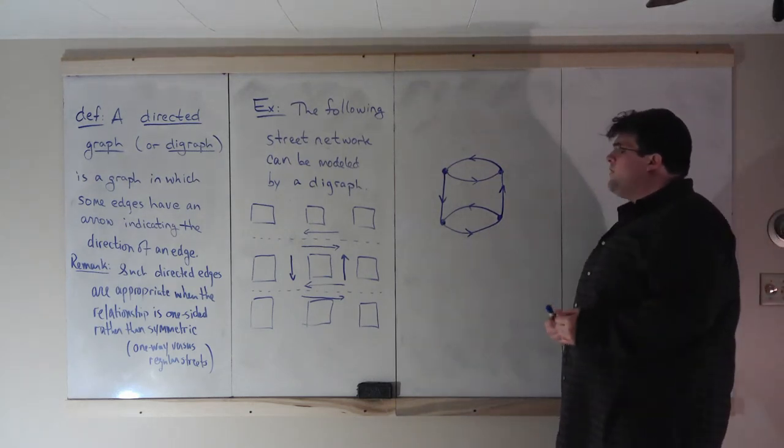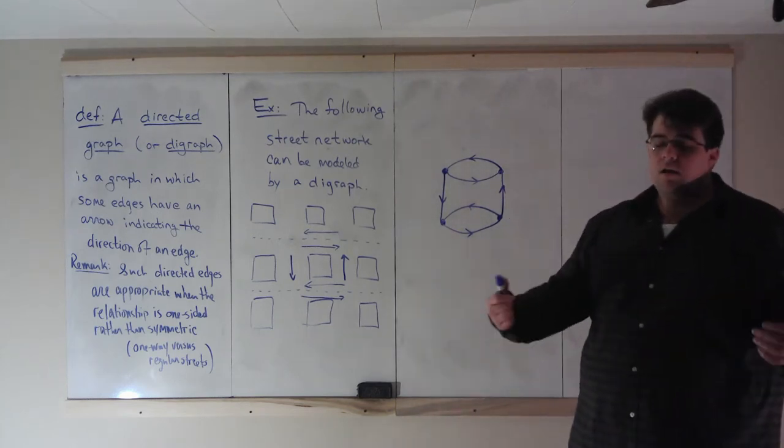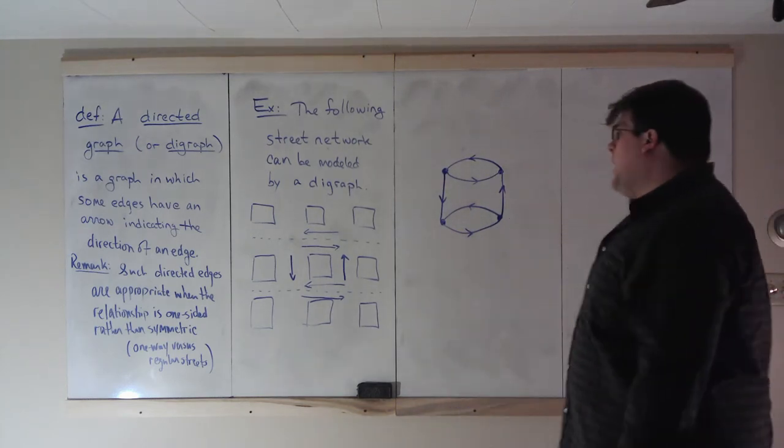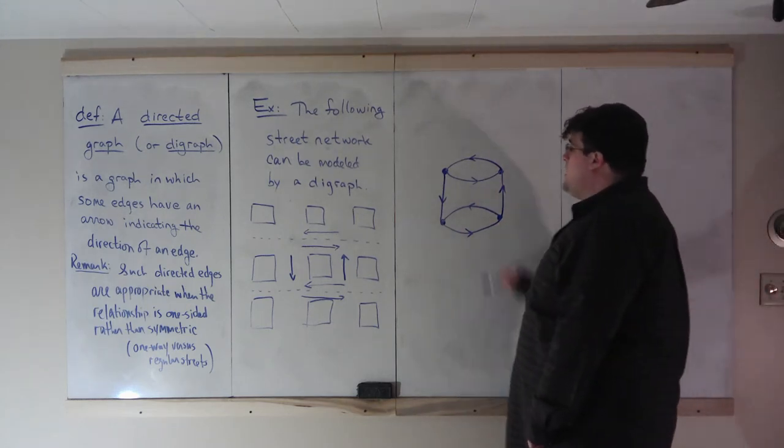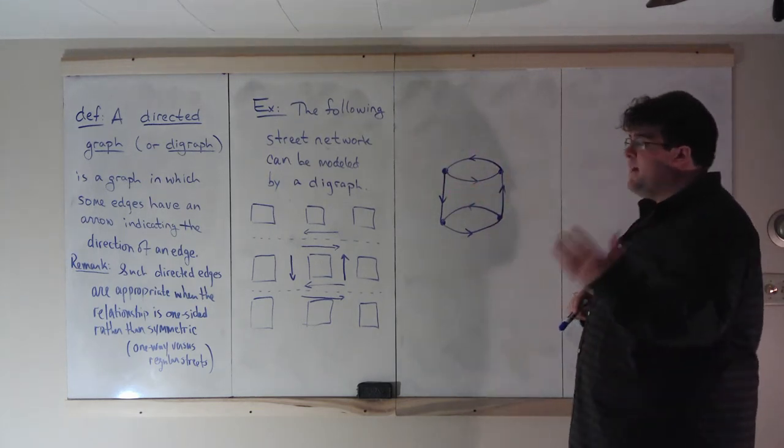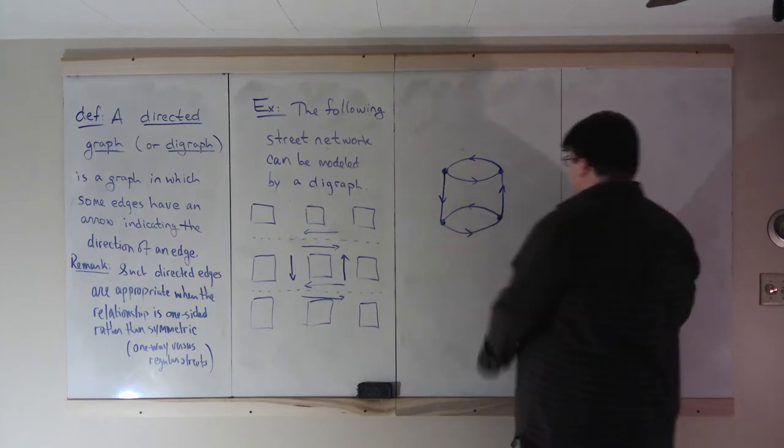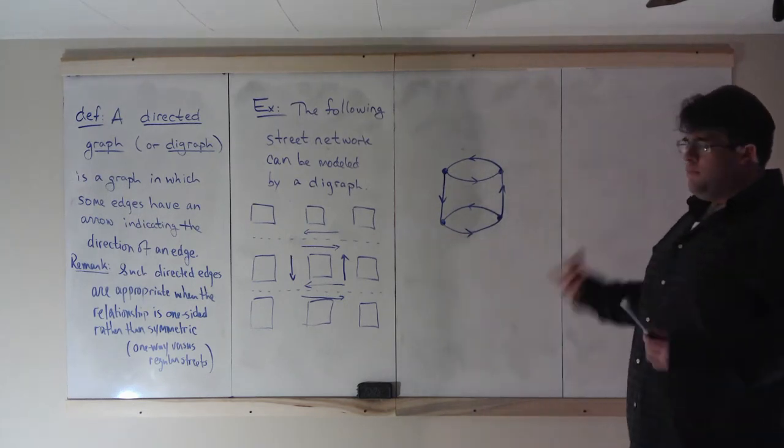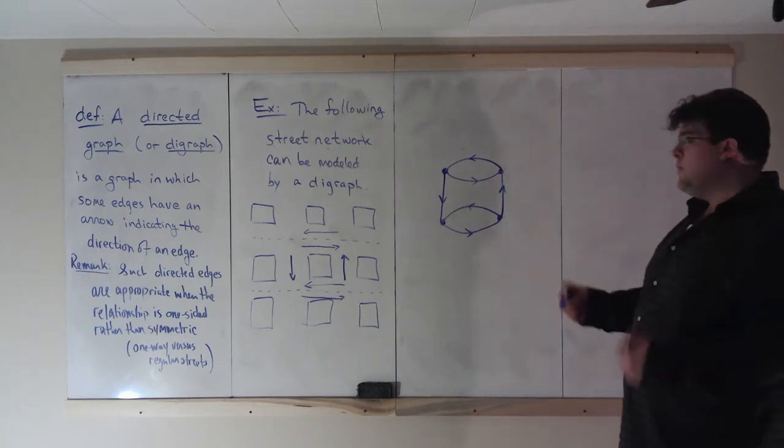For a digraph, the conditions are more complicated, and we're not going to cover them. One necessary, although not sufficient condition, is that all of the nodes do have to still have even valence.